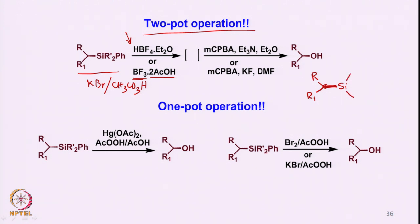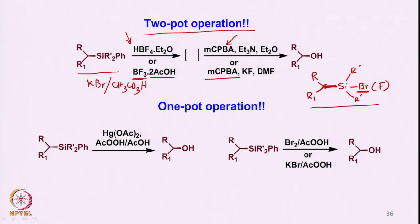Instead of getting the silicon-carbon bromide that we saw last time, what you will now get is fluoride, because HBF₄ as well as BF₃-acetic acid is a source of F⁻. So instead of getting the bromide, one gets fluoride, and then in the presence of any peracid such as meta-chloroperbenzoic acid, one can use triethylamine or potassium fluoride as a base to convert that silicon fluoride intermediate to the corresponding alcohol, similar to the Baeyer-Villiger type of oxidation mechanism.